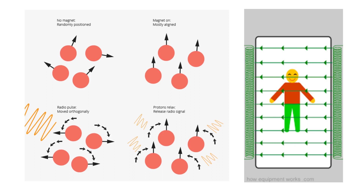My understanding of how an MRI works is this: a very high magnetic field is applied to the patient, and what this does is that it causes all the protons in water to align symmetrically. And then a radial pulse is applied orthogonally — at a 90 degree angle — and it causes the protons to misalign. And then when they fall back into their straight alignment, they release a certain amount of energy depending on the type of tissue and water density that's present.